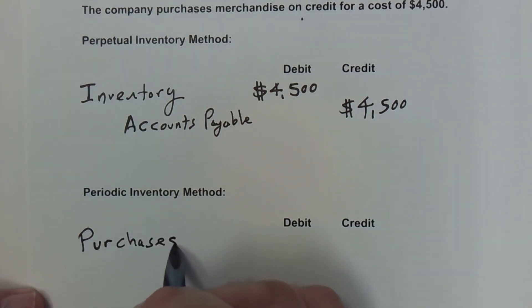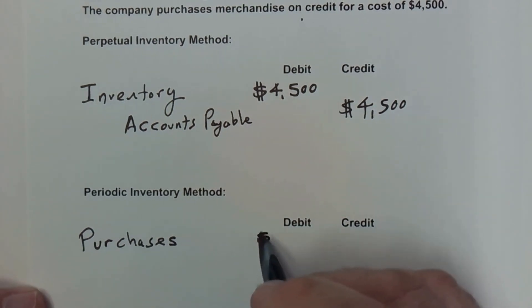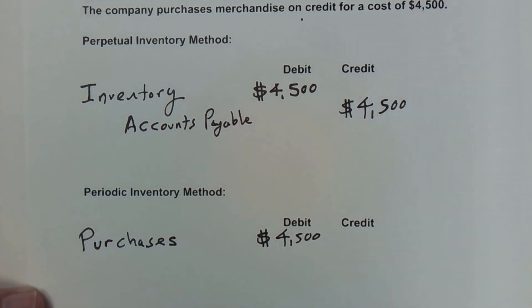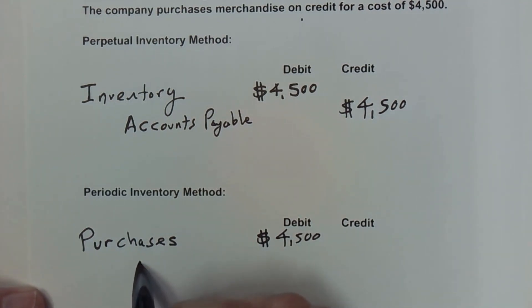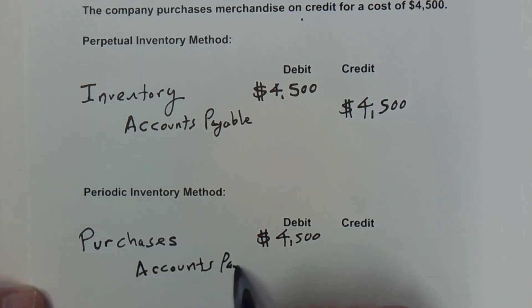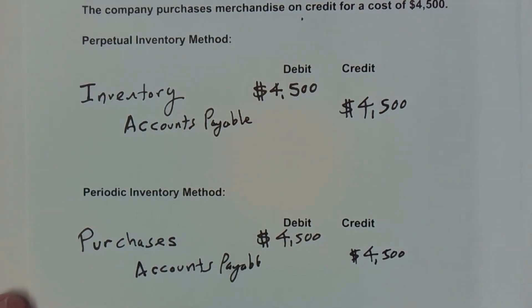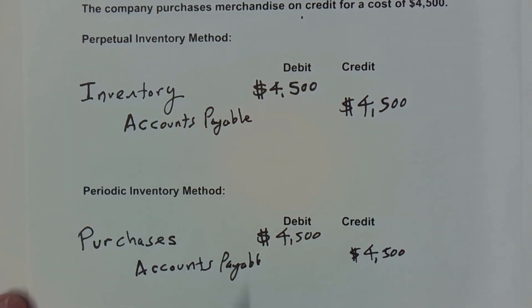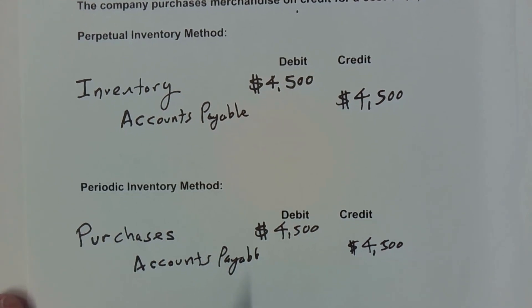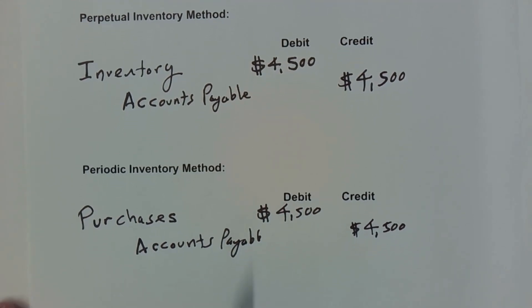The account name is 'Purchases' — it is an asset account, so it increases with debits: $4,500. We're going to need the credit that offsets it, and because everything was purchased on credit, it's going to be accounts payable for $4,500. That balances, so we have now properly recorded our purchase of merchandise in the periodic inventory method.